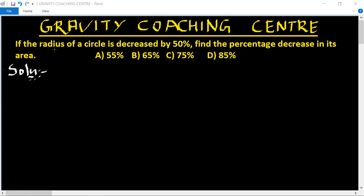The circle radius is decreased by 50%. Suppose the original radius is R, then the original area is pi R squared. When decreased by 50%, the new radius is...